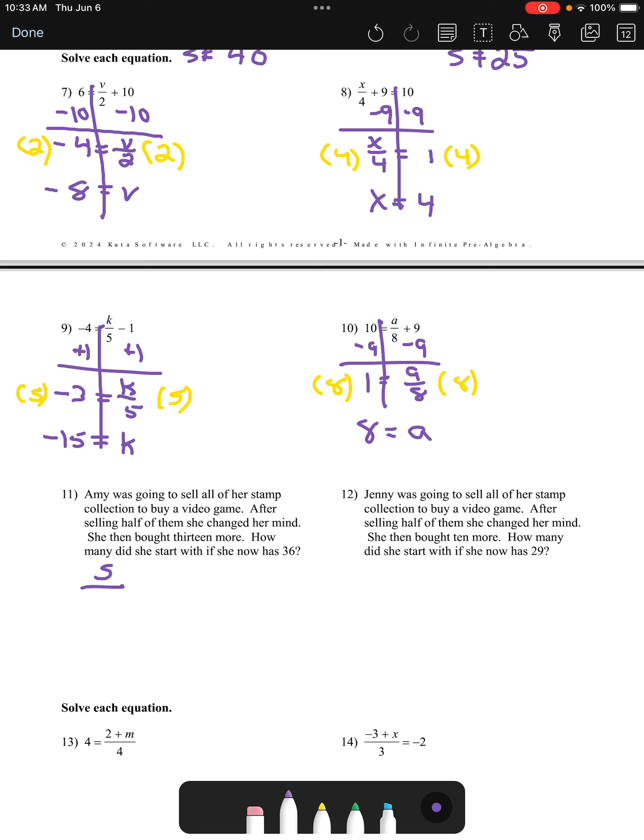Okay, so she had a certain number of stamps. She sold half of them, which means she cut what she had in half. Then she bought, so she gained, 13 more, and she now has 36. So our question is, what did she start with? Well, here's our equation. Let's solve it.